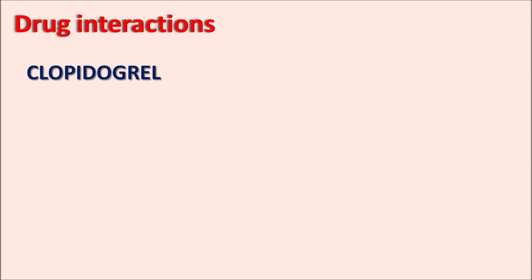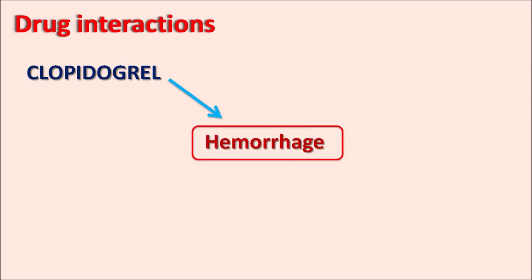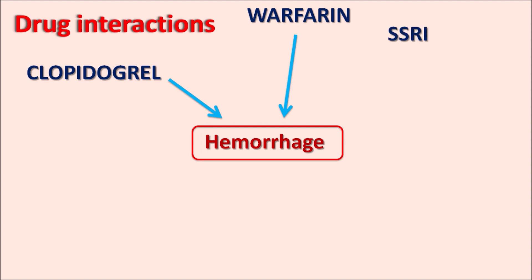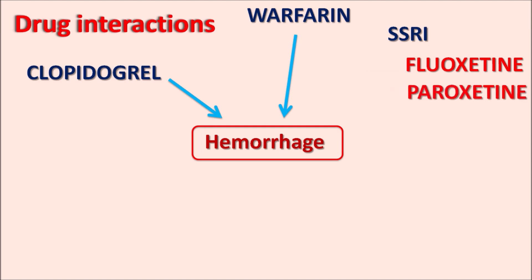Regarding drug interactions: clopidogrel interacts with proton pump inhibitors like omeprazole and esomeprazole, as already discussed. Additionally, clopidogrel can interact with other antithrombotic agents. Warfarin, an oral anticoagulant, can increase hemorrhage when combined with clopidogrel. SSRIs — selective serotonin reuptake inhibitors — such as fluoxetine and paroxetine can also increase hemorrhage.